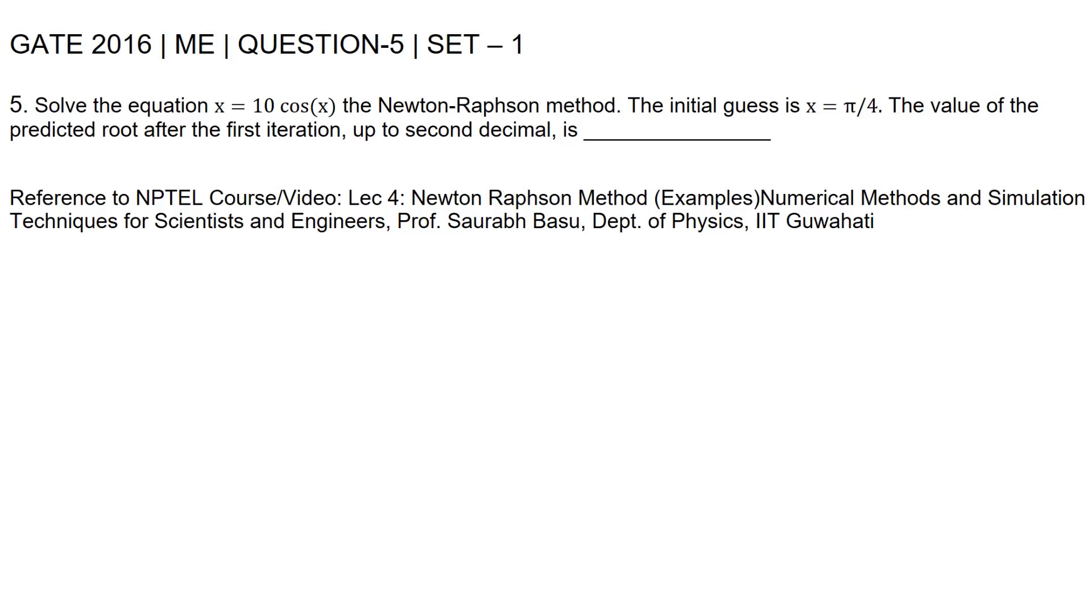The question is: solve the equation x equals 10 cos x using the Newton-Raphson method. The initial guess is x equals π/4. The value of the predicted root after the first iteration, up to second decimal, is blank. So we need to find the predicted root value after the first iteration using Newton-Raphson method.